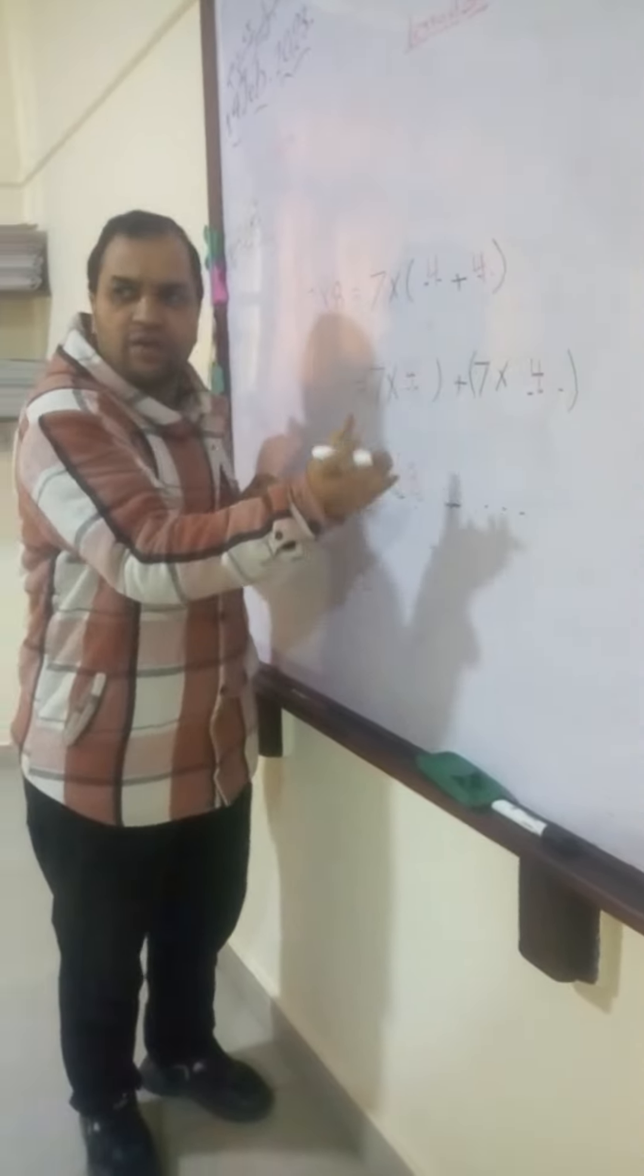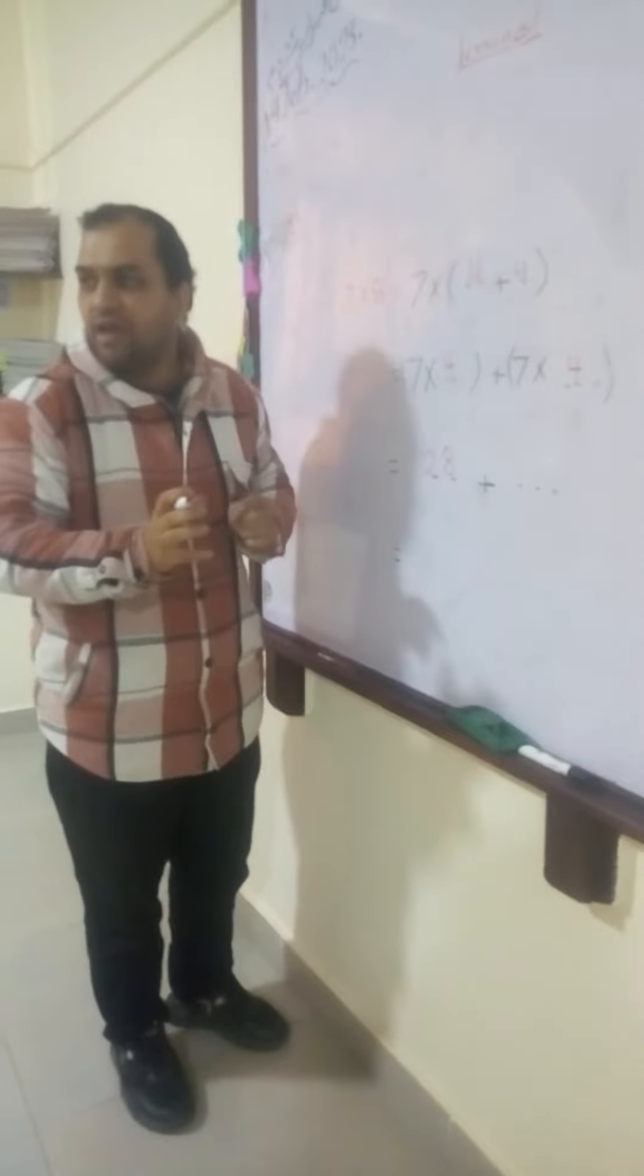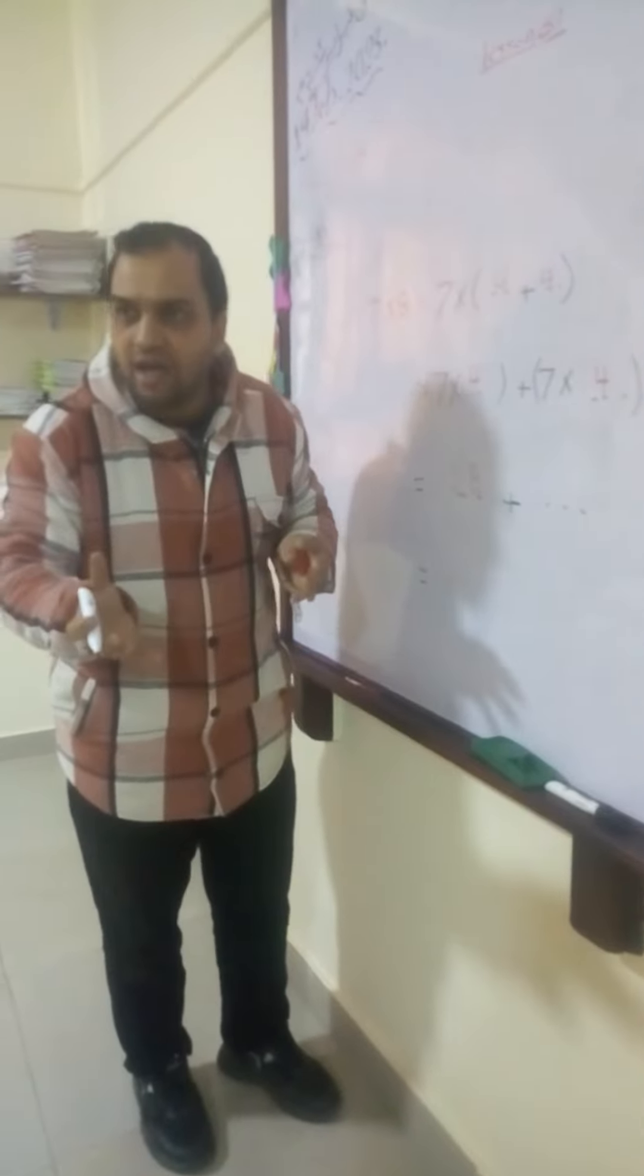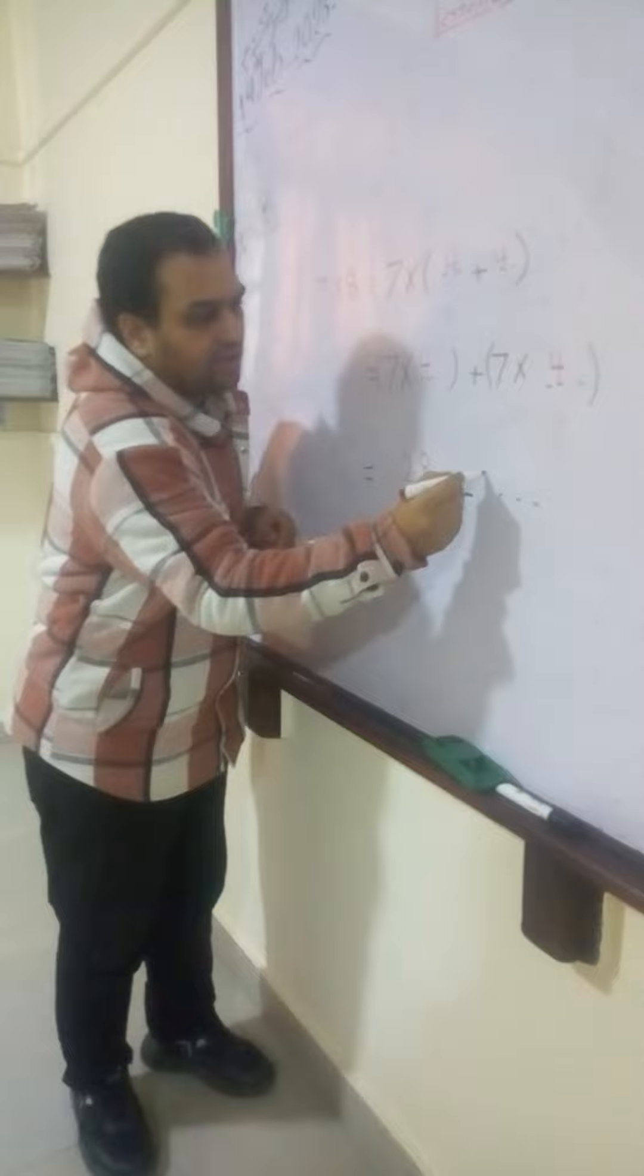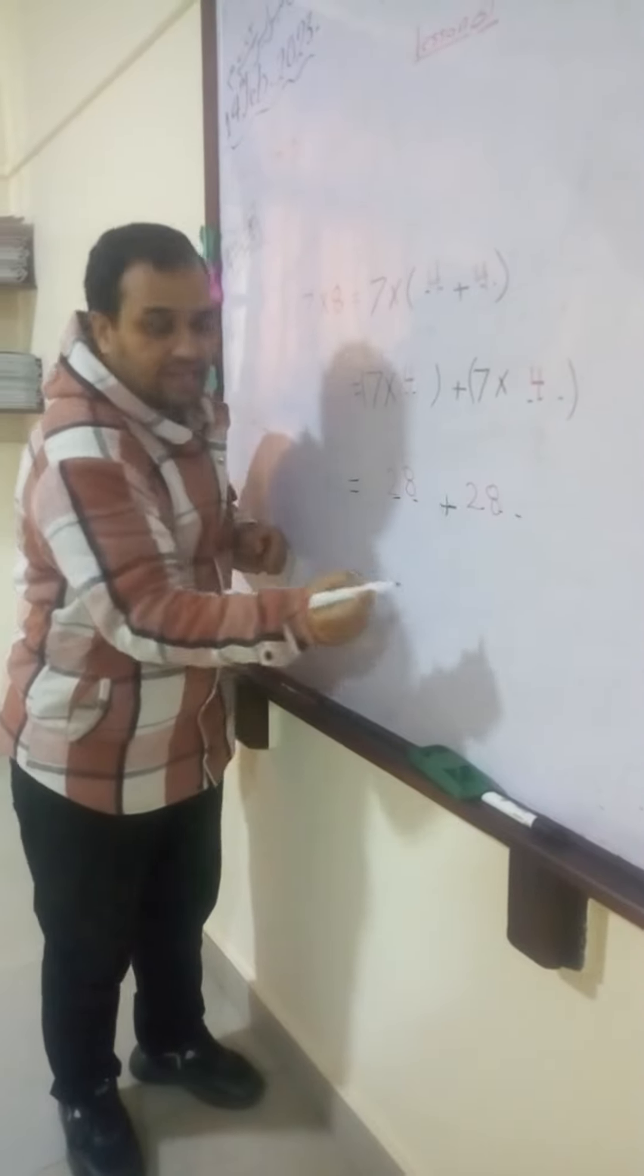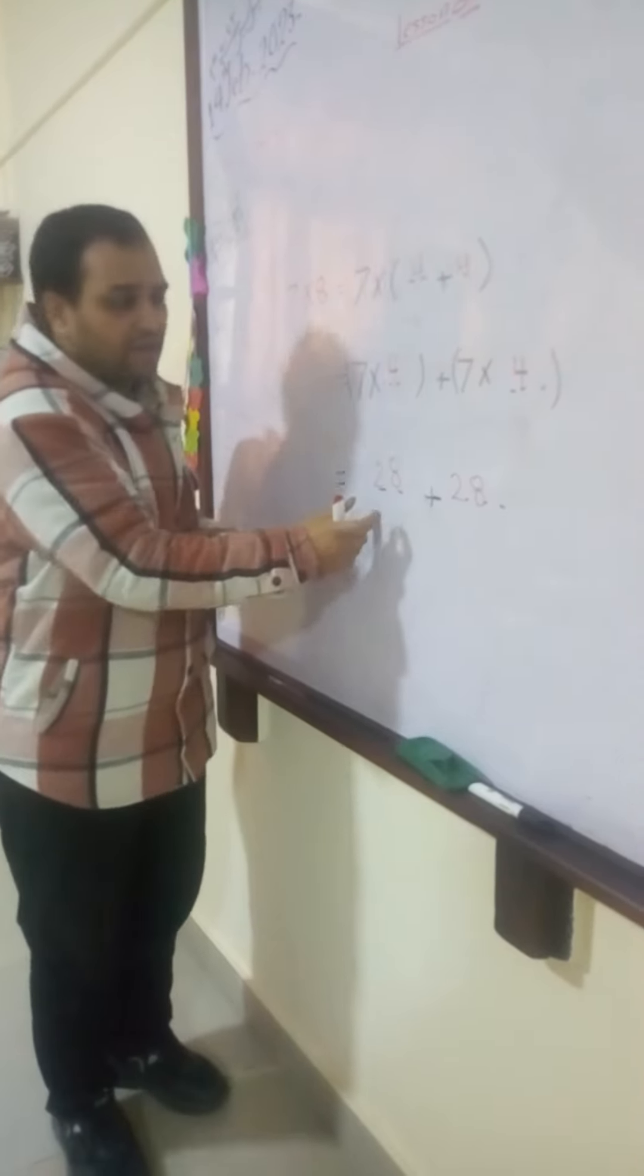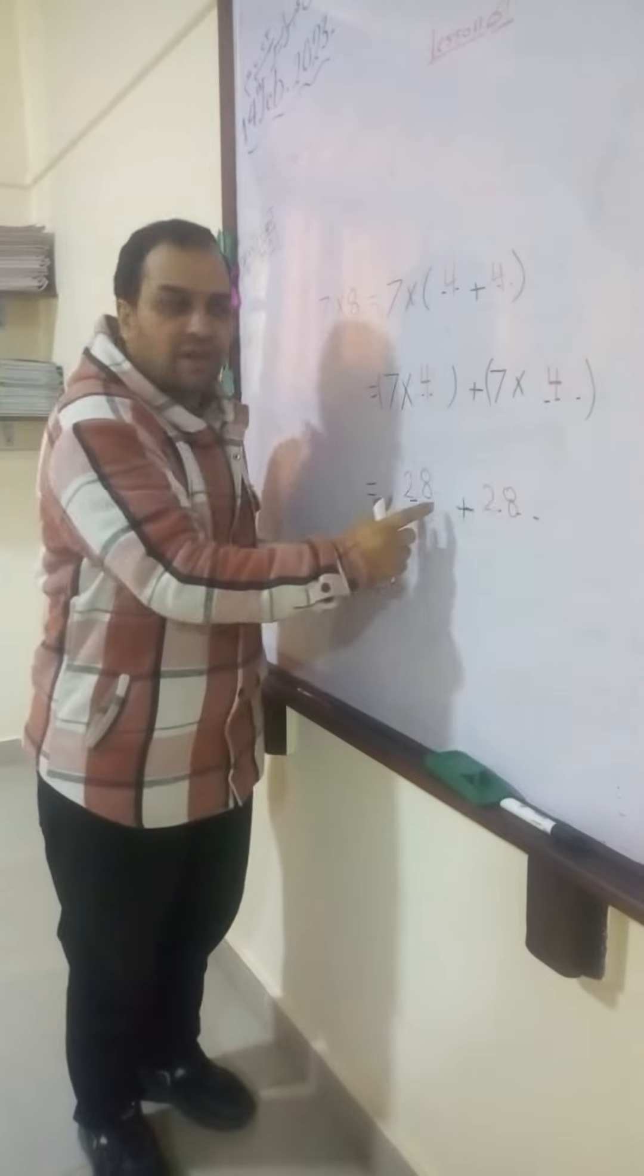And again, 7 times 4 equals 4 times 7. And 4 times 7 equals 28. We can write here 28. And then, we can find the result by adding them. 28 plus 28.